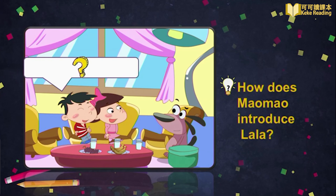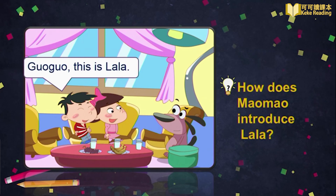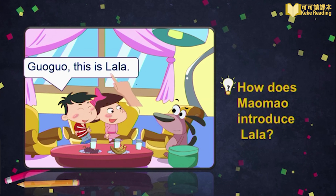This time, how does Mau Mau introduce Lala? Mau Mau says: Guo Guo, this is Lala. It's easy, right? You must have got the right answer. Can you follow Mau Mau to repeat? Guo Guo, this is Lala.